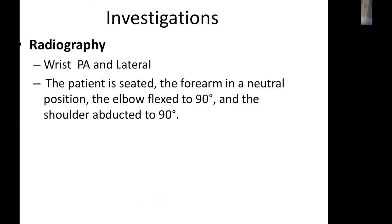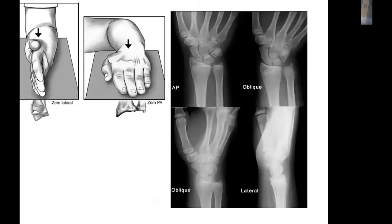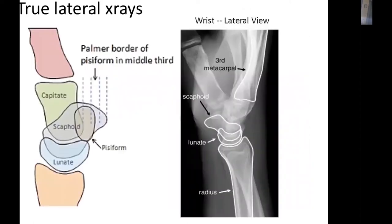Send the patient for investigations. A formal wrist X-ray with PA and lateral views should be taken with the elbow at 90 degrees and the forearm in neutral rotation to obtain accurate ulnar variance. Oblique views can help detect dorsal or volar pathology. A true lateral X-ray is mandatory, identified by the pisiform lying midway between the anterior border of the scaphoid and the anterior border of the capitate.